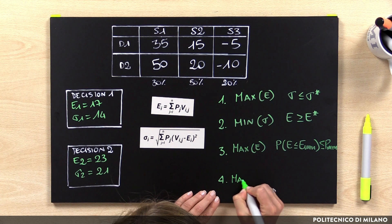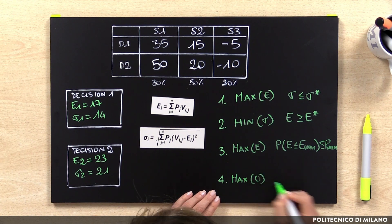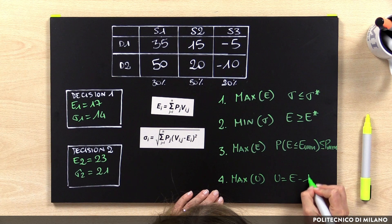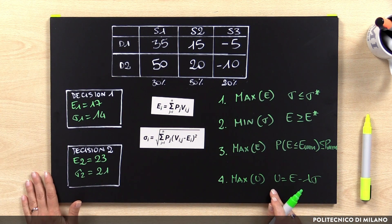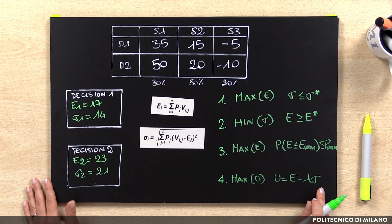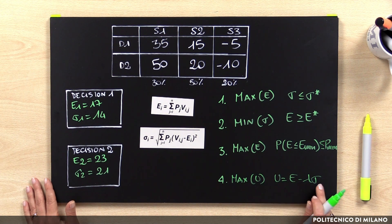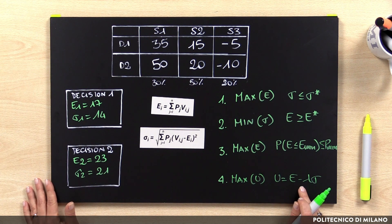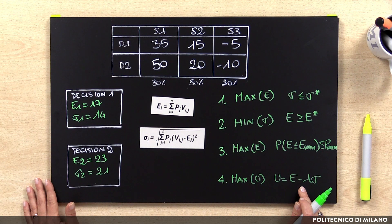The fourth method is the maximization of the utility function. The utility function aims at linking the two views — expected value and standard deviation — into a single function: U = expected value − λ × standard deviation. Lambda represents the propensity of the decision maker to risk. Lambda is above zero if the decision maker is risk-averse, below zero if risk-inclined, and equal to zero if risk-indifferent.